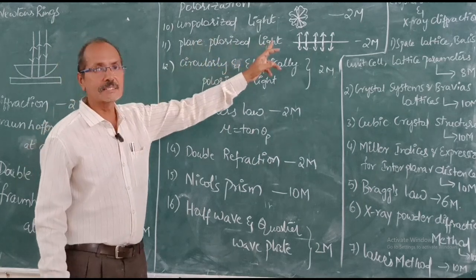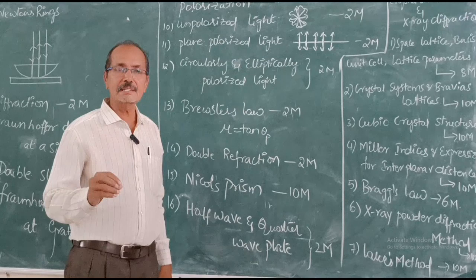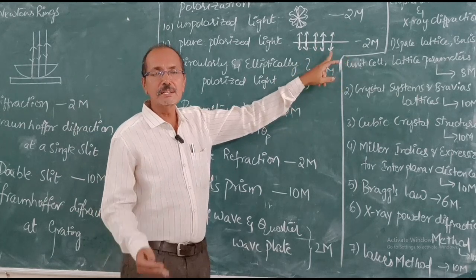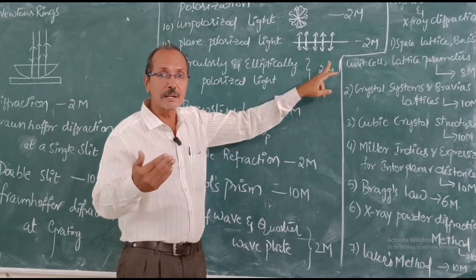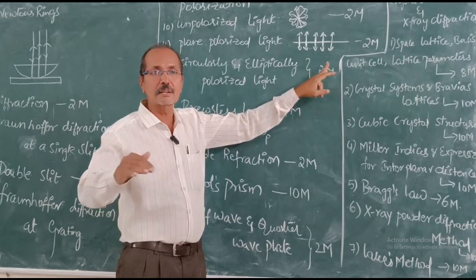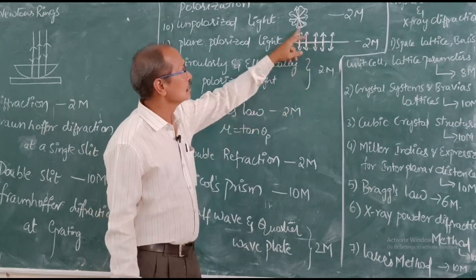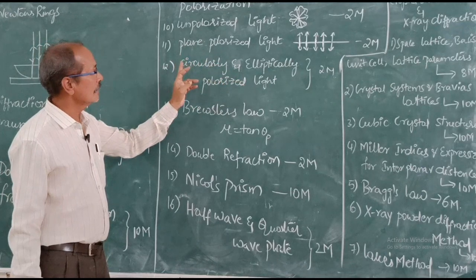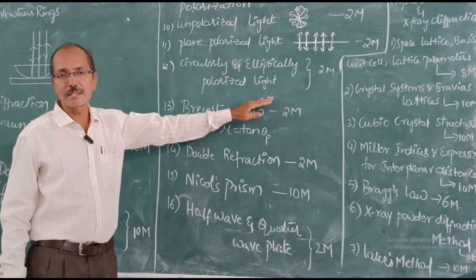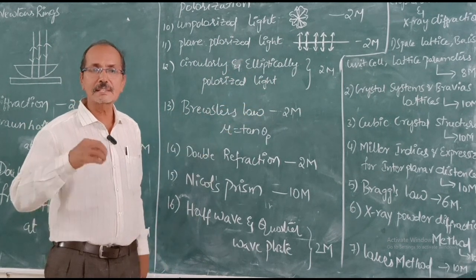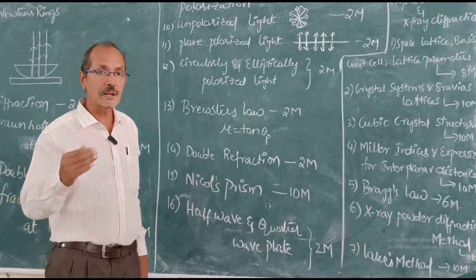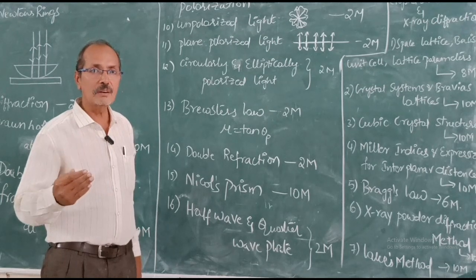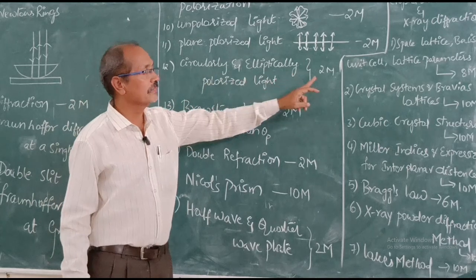What is plane polarized light? If the electrical vibrations in a light wave are confined to one plane, it is called plane polarized light. If these electric vibrations are confined to a vertical plane, it is called vertically polarized light. If confined to a horizontal plane, it is called horizontally polarized light. These are important for two marks. What is circularly polarized light? If the electric vector describes a circle during one time period, it is called circularly polarized light. If the electric vector describes an ellipse during one time period, it is called elliptically polarized light. This is also important for two marks.